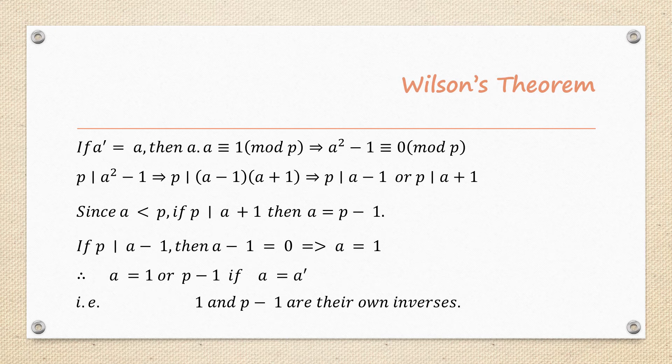Now there are two possibilities. If A' = A, then since A·A⁻¹ ≡ 1 (mod P), replacing A⁻¹ with A gives A² ≡ 1 (mod P), which means A² - 1 ≡ 0 (mod P). This means P divides A² - 1; if the remainder is 0, P divides that number.